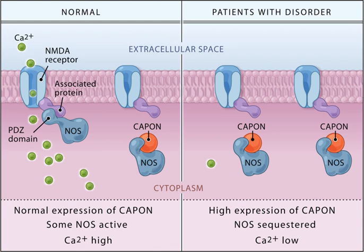Neurotransmitters are stored in synaptic vesicles, clustered close to the cell membrane at the axon terminal of the presynaptic neuron. Neurotransmitters are released into and diffuse across the synaptic cleft, where they bind to specific receptors on the membrane of the postsynaptic neuron.